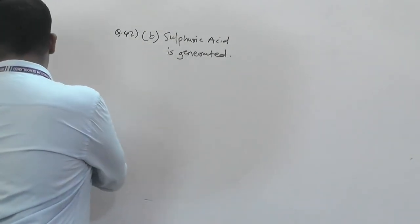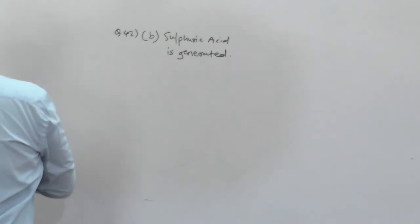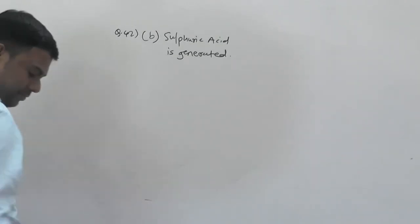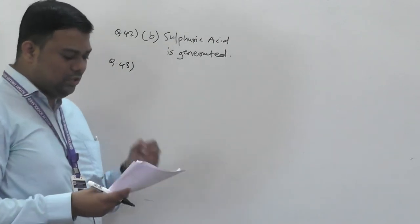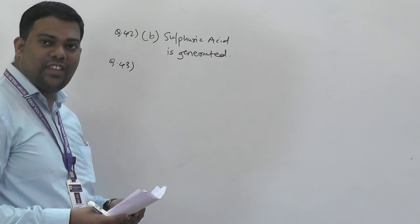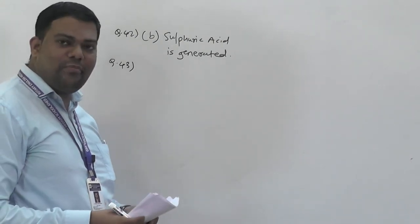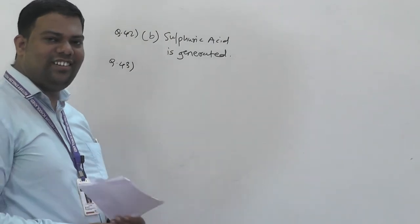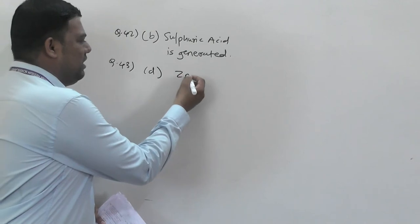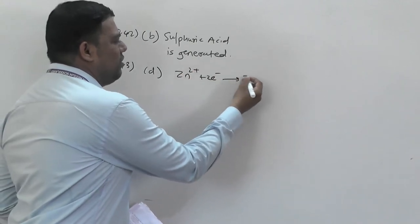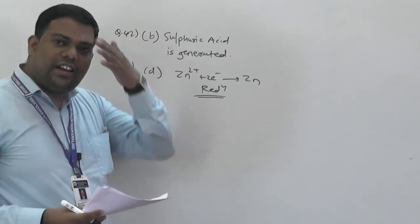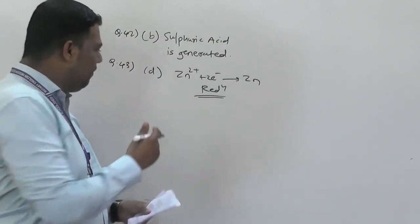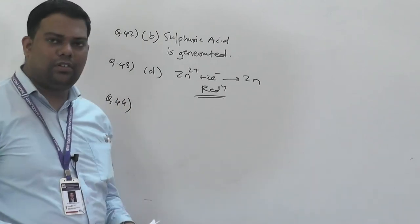Question number 43: which one is not an anode reaction? At the anode, oxidation occurs. So the reaction Zn²⁺ + 2e⁻ → Zn is a reduction reaction, not an anode reaction. Answer: option D.